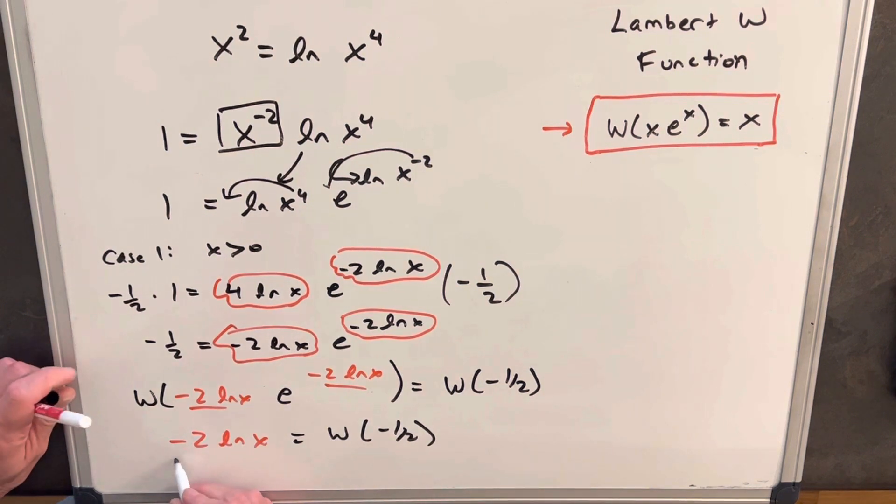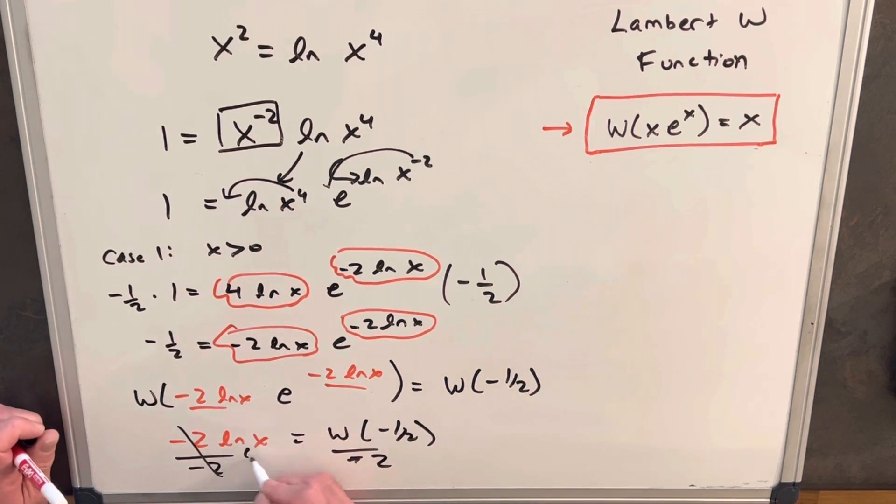And then divide by minus 2 on both sides. Our minus 2s here are going to cancel, and then we can just rewrite the x using the property of natural log and raise it to an e power.